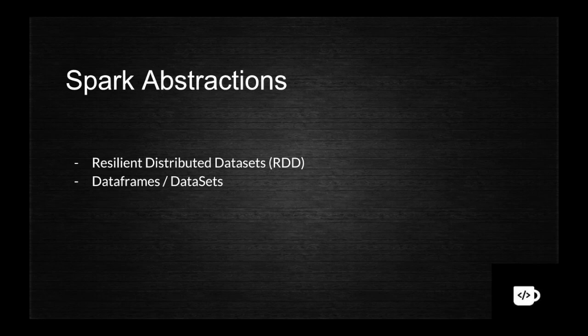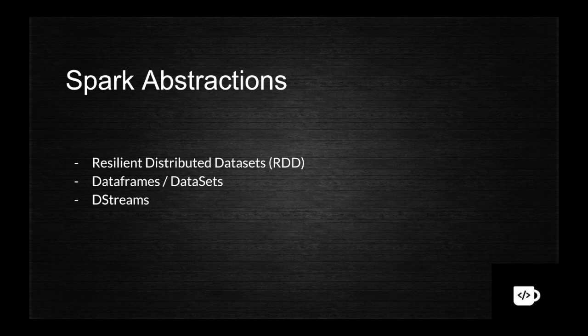The next abstraction is DataFrames or DataSets. DataFrames are an abstraction covering Spark Core, SQL, Streaming, and the machine learning library. There is also something called DStreams - these are for Spark Streaming-related APIs. DStreams is another API used for stream processing.